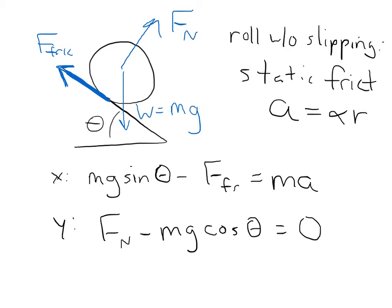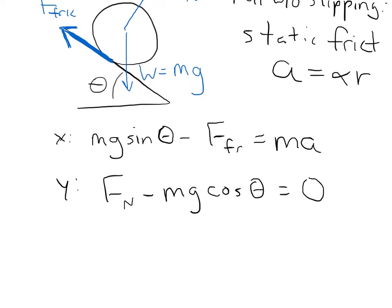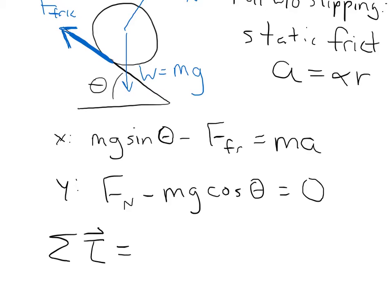The last thing we need to write down is the sum of torques. The only torque acting here is the torque due to the force of friction, with a moment arm of radius r. So the sum of torques is just r times the force of friction, and that equals I·alpha, where I is the moment of inertia and alpha is the angular acceleration. Remember, rolling without slipping means linear and angular acceleration are related, and we'll need that to solve this.